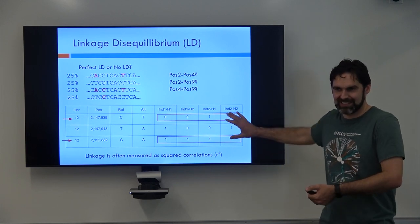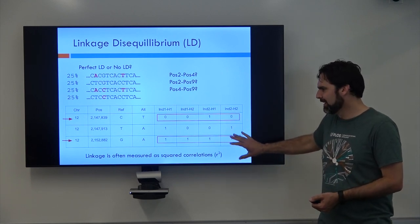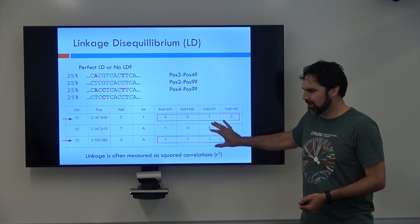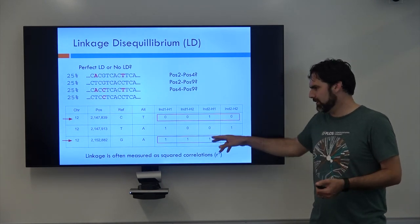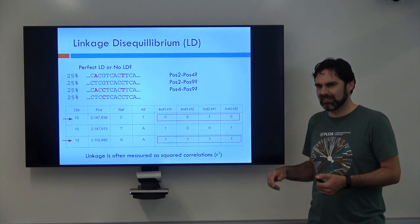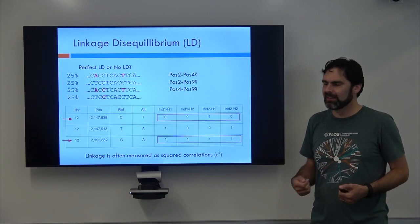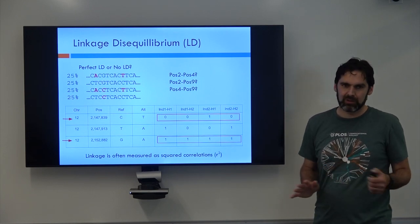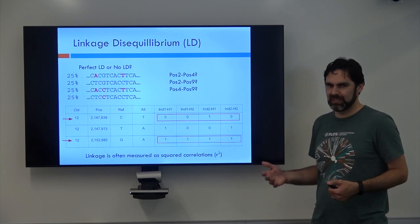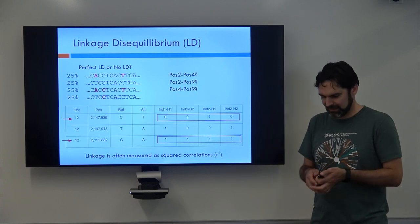You don't really need to know what correlation means mathematically right now other than this will give you a number and it will take whatever that correlation is and square it, so it'll give us a number between 0 and 1. 0 meaning there's no linkage whatsoever, 1 being perfect linkage and then scales between there.